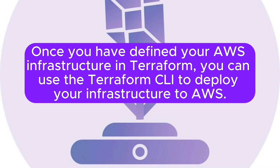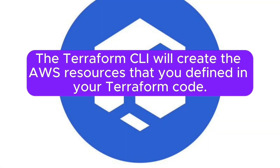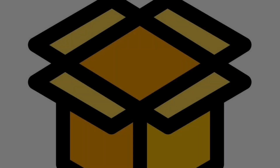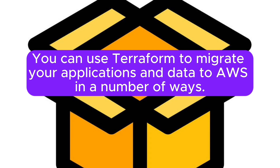Once you have defined your AWS infrastructure in Terraform, you can use the Terraform CLI to deploy your infrastructure to AWS. The Terraform CLI will create the AWS resources that you defined in your Terraform code. You can use Terraform to migrate your applications and data to AWS in a number of ways.